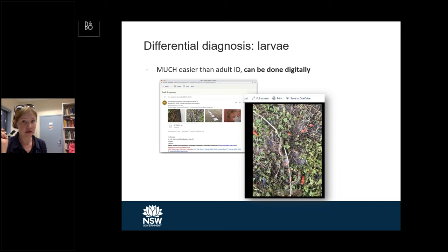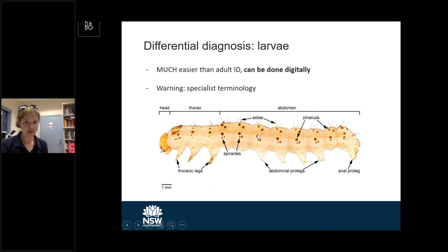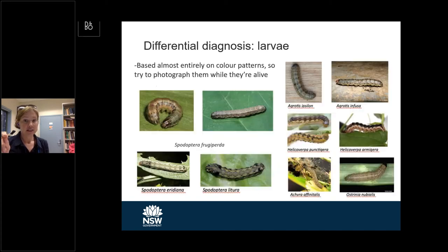Larvae are a lot easier. Almost all of our larval diagnostics for suspect fall armyworm larvae have been done digitally — we've received quite a few emails through the biosecurity hotline with photos attached. I can look at the larva and say yes, it's a suspect, send it in, or no, it's not. On a typical lepidopteran larva, you'll see brown spots of sclerotized, melanized areas called the pinacula — singular pinaculum — and these are very helpful in recognizing the family, genus, and species. Larval diagnostics are based almost entirely on color patterns.